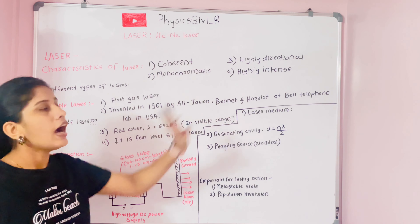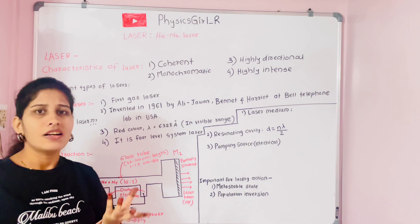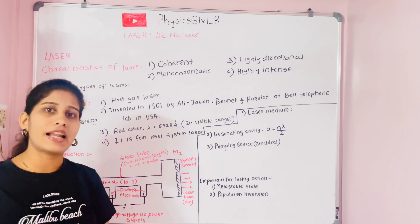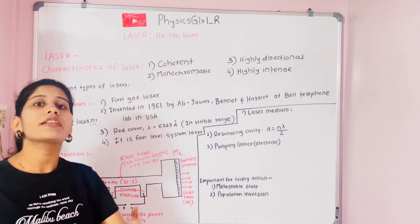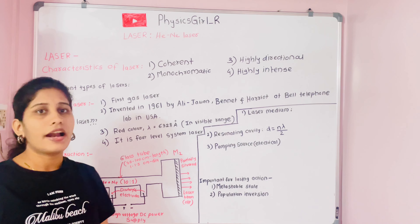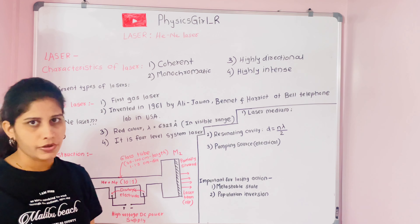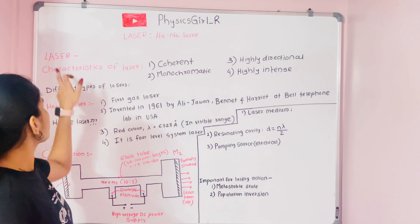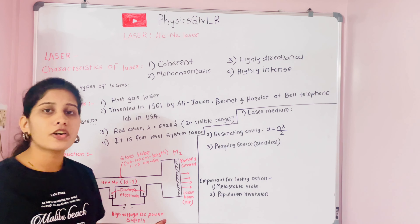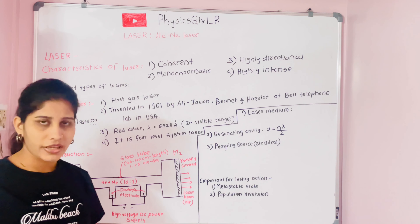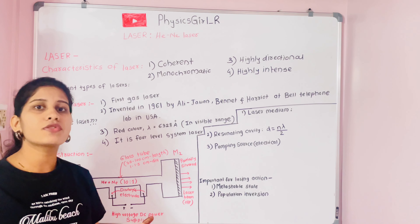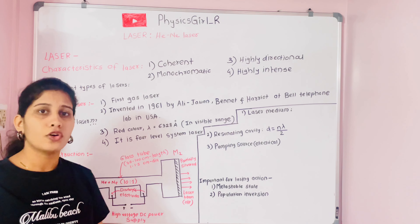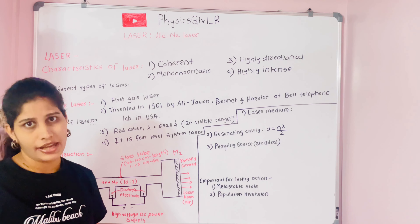Additionally, ordinary light is very low in intensity compared to laser light. Laser light is highly intense, covers long distances, and retains its directionality. That is why laser light is distinguished from ordinary light. It is an optical device that gives output in the form of light, and it is monochromatic, coherent, highly directional, and intense.